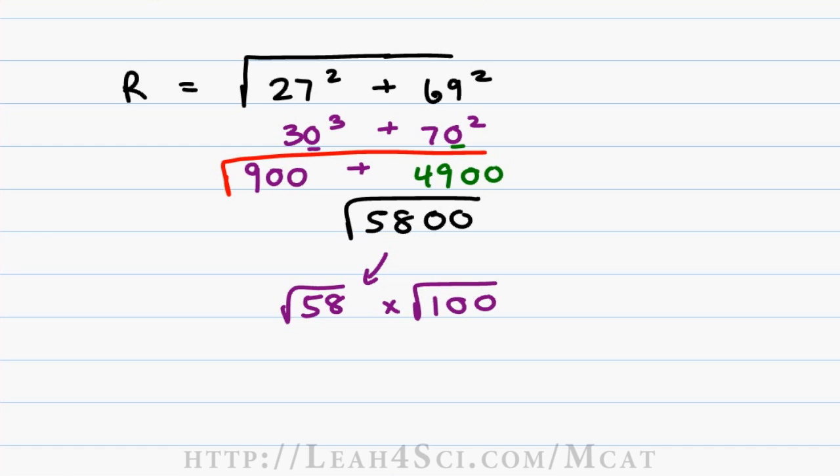The square root of 58 is not a number that I know so I try to find a recognizable square below and above the number that I'm given. The square root of 49 is less than the square root of 58 which is less than the square root of 64. Rad 49 is 7, rad 64 is 8 so we'll guesstimate that our answer is approximately 7.5.